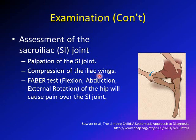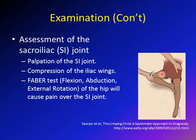Compression on the iliac wing will cause pain if it originates from the sacroiliac joint. The examiner places one hand on each side and compresses toward the midline, checking for sacroiliac pain. The FABER test — flexion, abduction, and external rotation of the hip — is commonly used to assess sacroiliac joint pain. As shown in the picture, the examiner performs flexion, abduction, and external rotation of the hip joint and observes whether this causes pain over the sacroiliac joint.